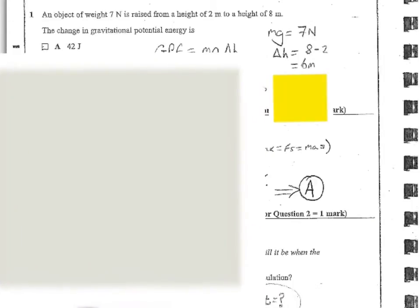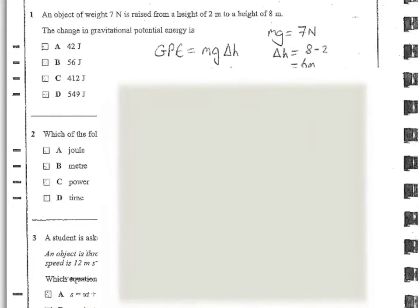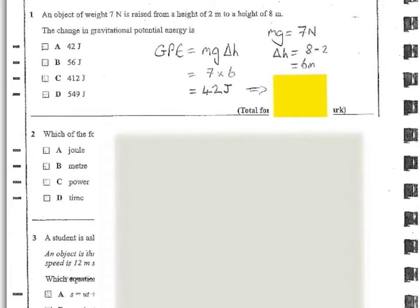Question one. An object of weight 7 newtons is raised from a height of 2 meters to a height of 8 meters. The change in gravitational potential energy is one of these answers. So firstly, mg here is 7 newtons and delta H is 8 minus 2 which is 6 meters. So we've got a 7 newton force being moved through a distance of 6 meters. So gravitational potential energy is mg times delta H which is going to be 7 times 6 which gives us 42 joules. And consequently, that means that the answer here is A.